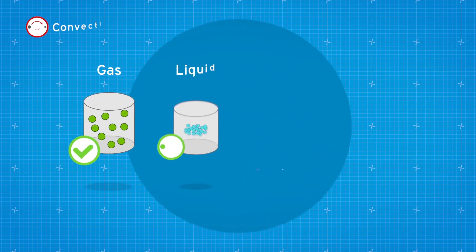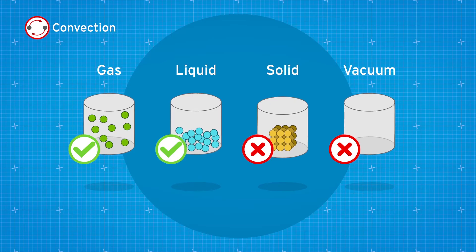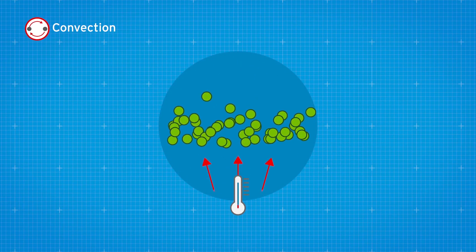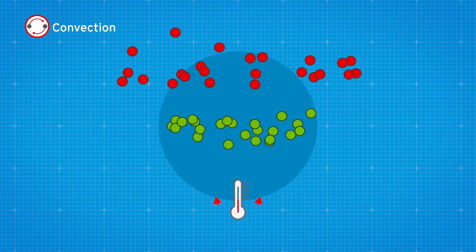Convection only takes place in gases or liquids. It cannot happen in solids or in a vacuum. When the molecules that make up a gas or liquid heat up, their density will change. Warmer air will become less dense and rise.